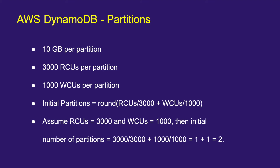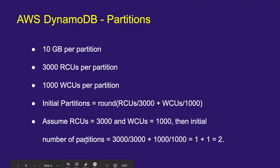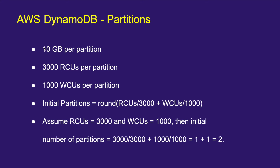How many partitions DynamoDB creates is based on your read/write estimates. DynamoDB can perform at most 3,000 RCUs per partition per second and 1,000 WCUs per partition per second. The formula for the number of initial partitions is: RCUs ÷ 3000 + WCUs ÷ 1000. For example, with 3,000 read capacity units and 1,000 write capacity units you get 2 partitions. Each partition can store up to 10 GB.